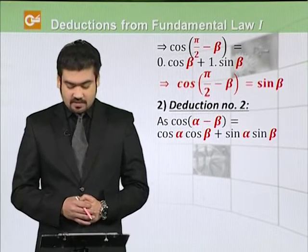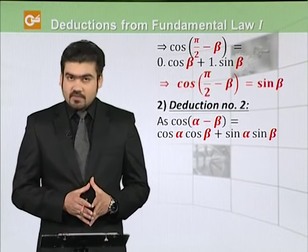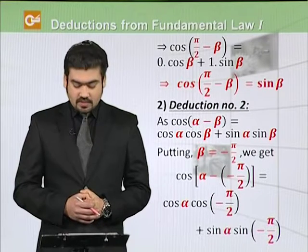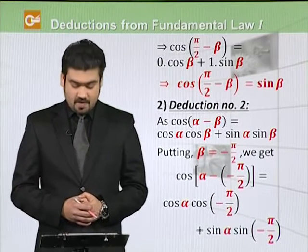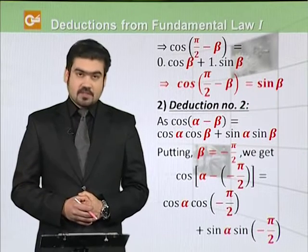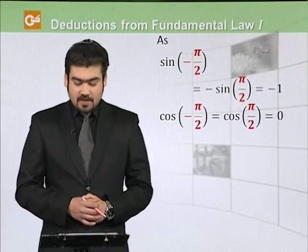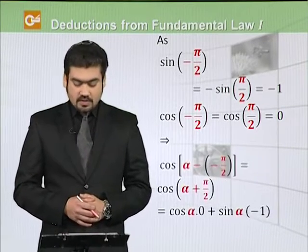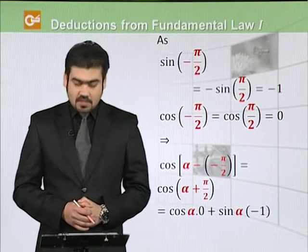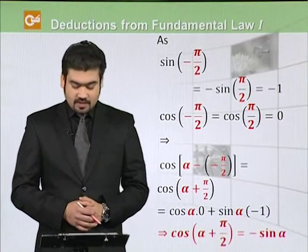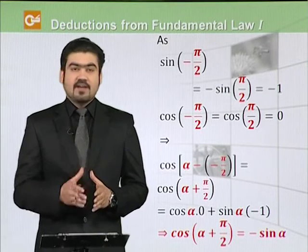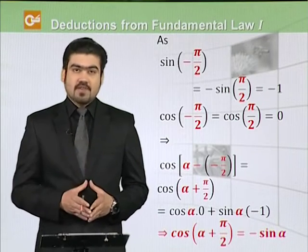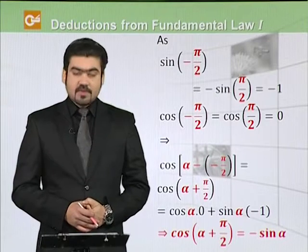Second deduction: using the fundamental law of trigonometry again, hum beta ko replace karenge minus π/2 se. So cos(α - (-π/2)) = cos α·cos(-π/2) + sin α·sin(-π/2). sin(-π/2) = -1 and cos(-π/2) = 0. So cos(α + π/2) = cos α·0 + sin α·(-1). Therefore, cos(α + π/2) = -sin α. Kisi bhi angle mein agar 90 degrees add karein aur uska cos lein, it equals minus sin of that angle.